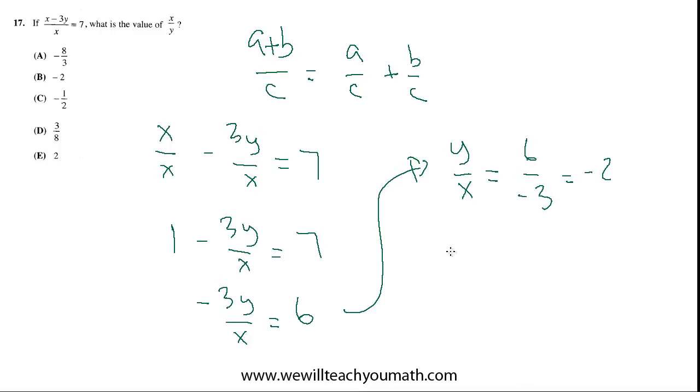So now, if we have y over x equals negative 2, we can take the reciprocal of both sides and get x over y equals, this is really over 1, right? So that becomes negative 1 half. So c is the best choice.